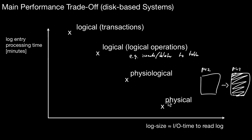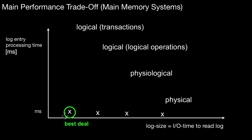What happens in the main memory system? The main memory system has a different trade-off. If you execute a transaction in the main memory system, performance is very different — in disk-based systems it's typically on the order of minutes, but in main memory these times go down to milliseconds. The execution times are so close to one another that the overall recovery process becomes dominated by the actual reading time for the log. So in the main memory system, it makes sense to move toward a more logical-oriented log record.